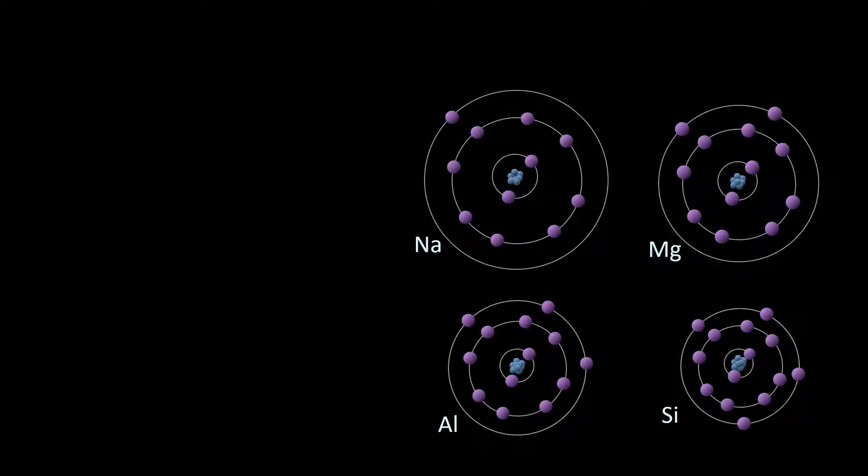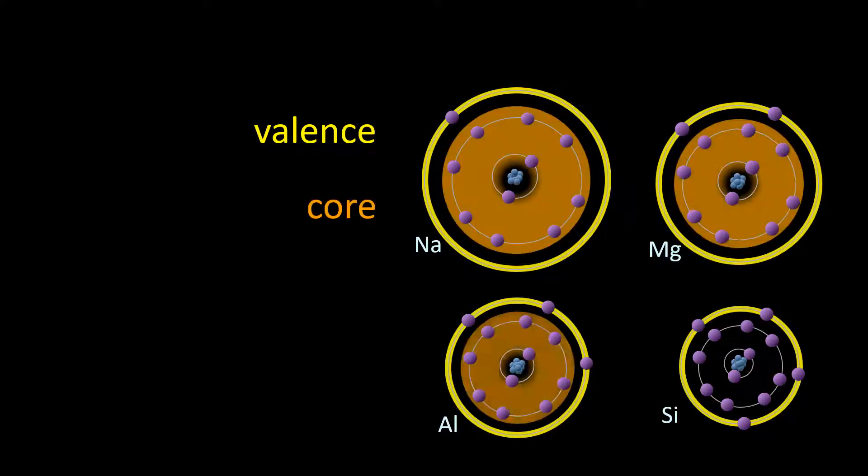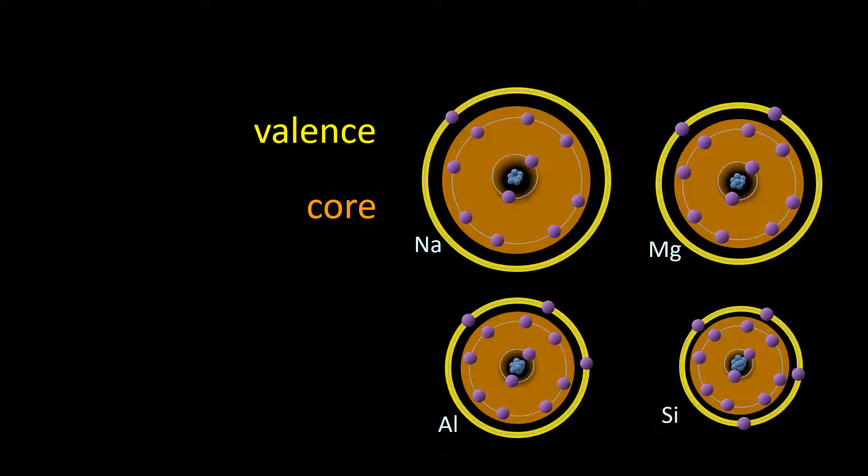First, and very importantly, we need to make sure we are acquainted with where valence and core electrons are on our atomic model. It is the outer energy level where the valence electrons are, and it is the inner energy levels where the core or inner electrons are. Note that with these four elements, the core electrons represent the stable noble gas configuration of neon.